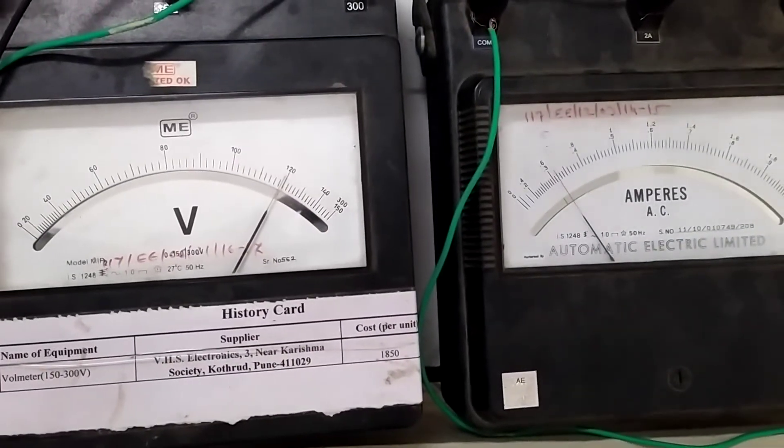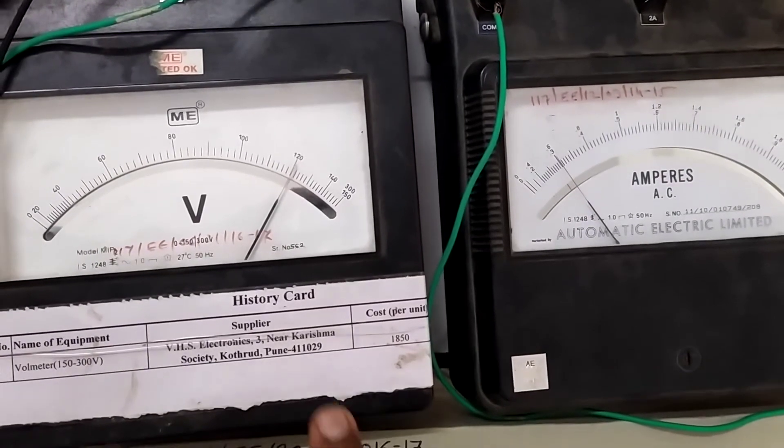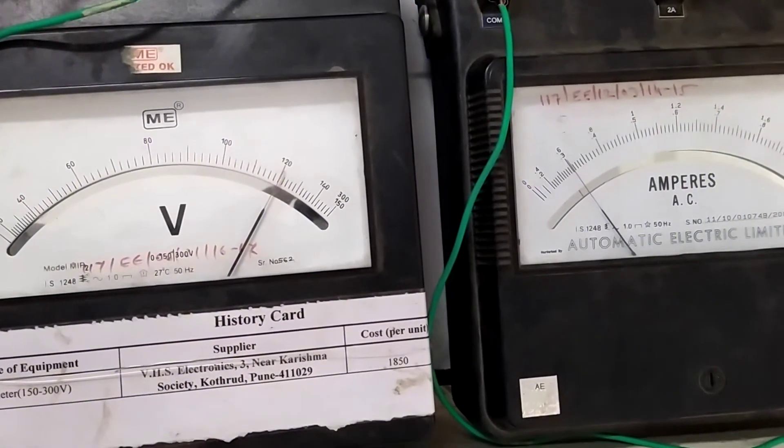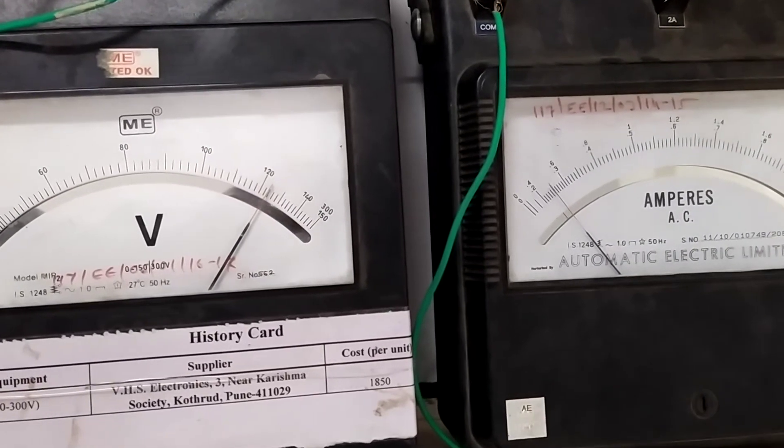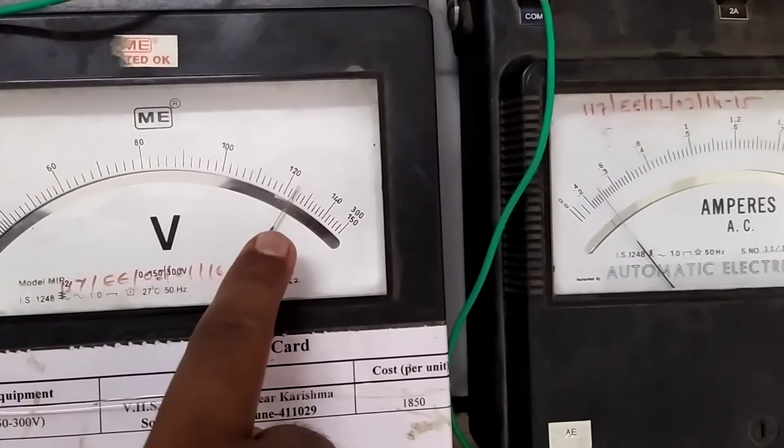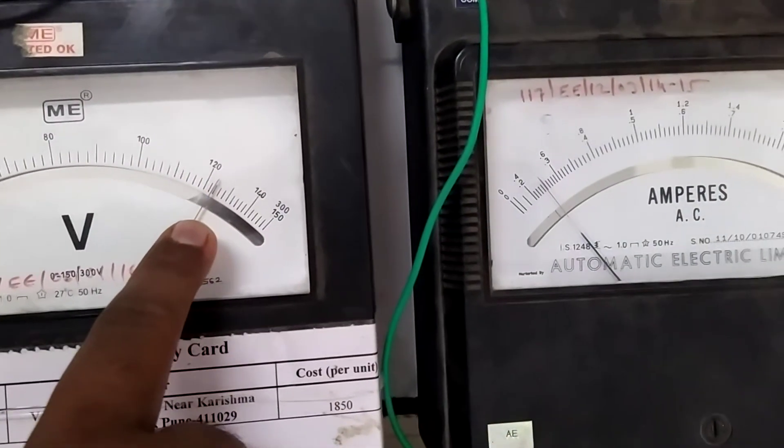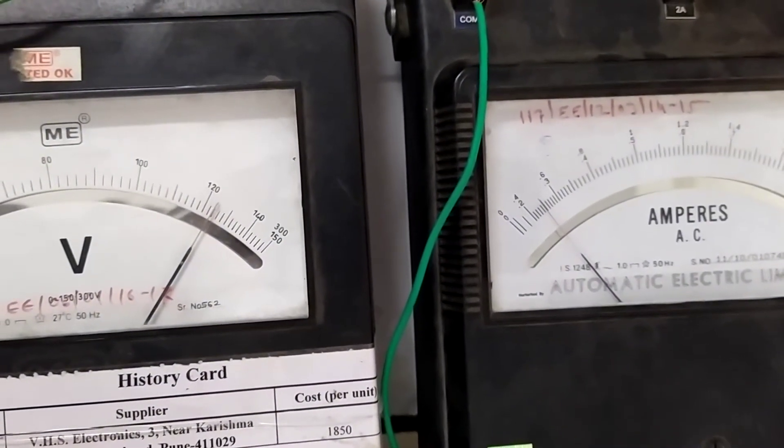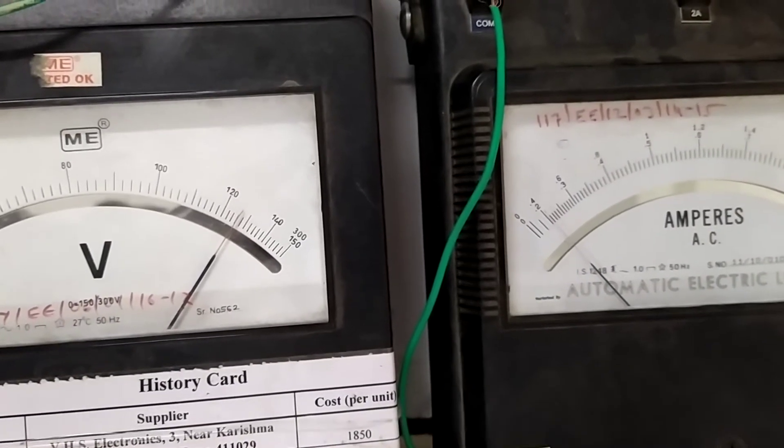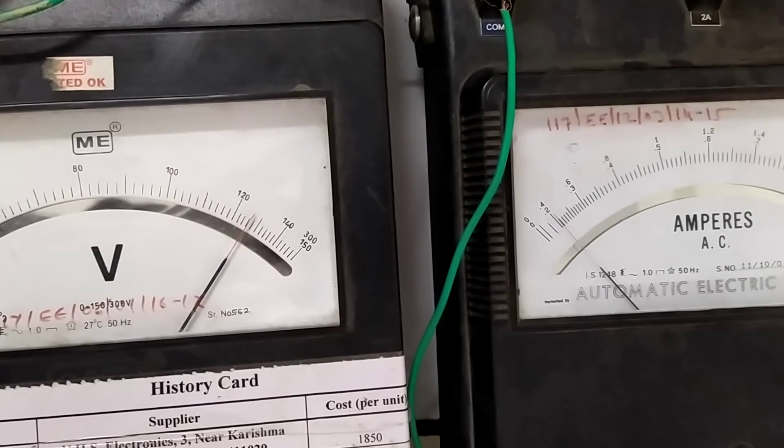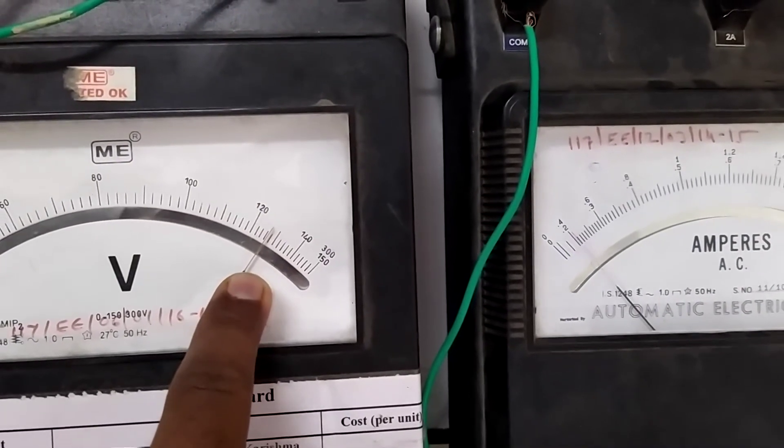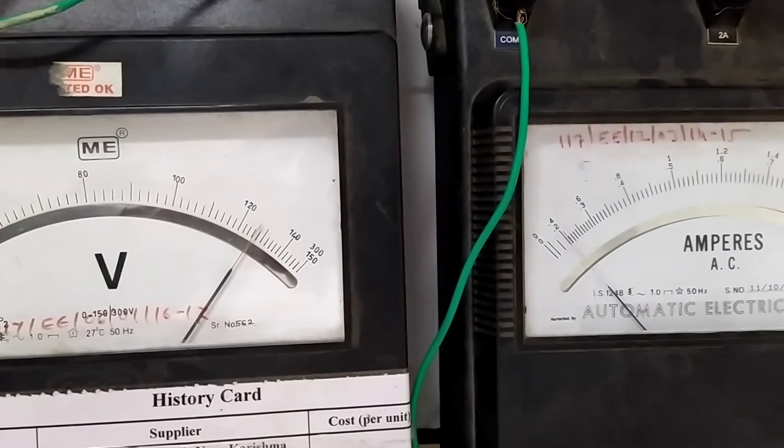Now load current is 0.6. Load decreases and accordingly the terminal voltage is 120 into 2 means 240. Now load current is 0.5 ampere. Terminal voltage is near about 122 into 2, 244 is the terminal voltage. Slightly decrease 0.2. First reading and at that time terminal voltage is seen here 128 into 2, 256 is the voltage.